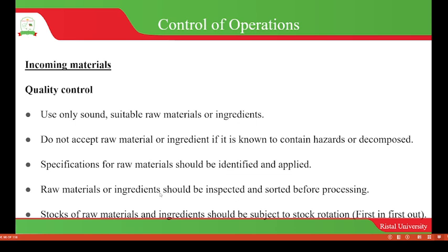Raw materials or ingredients should be inspected and sorted before processing. Stocks of raw materials and ingredients should be subject to stock rotation — that is, first in, first out. This means that the raw materials stocked first have to be used first, because if we use recently stocked materials, the old ones may end up decomposing or getting spoiled in the store.